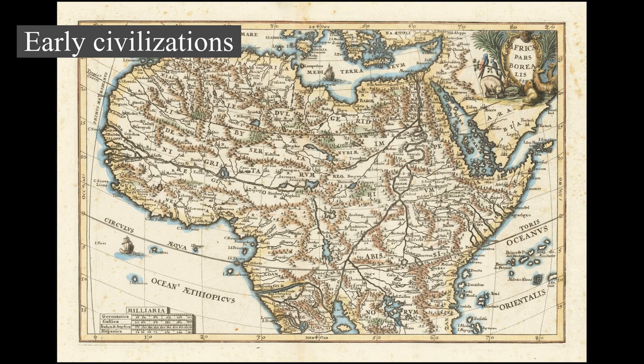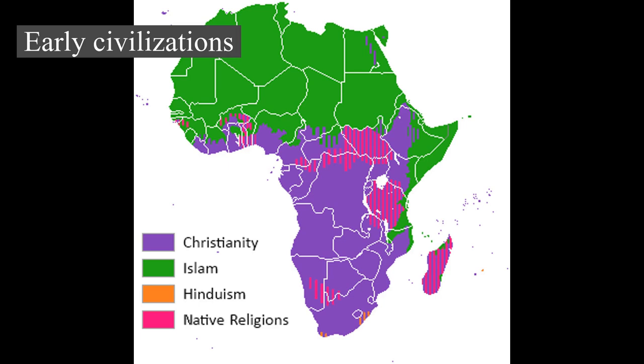Islamic North Africa had become diverse and a hub for mystics, scholars, jurists, and philosophers. During this period, Islam spread to sub-Saharan Africa, mainly through trade routes and migration. In West Africa, Dhar Tichit and Walata in present-day Mauritania figure prominently among the early urban centers, dated to 2000 BC. About 500 stone settlements litter the region in the former savannah of the Sahara.